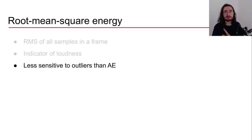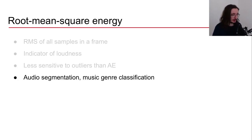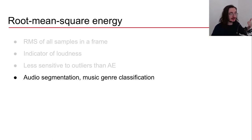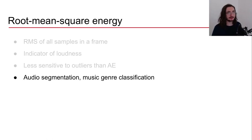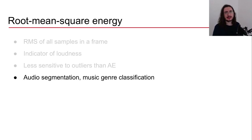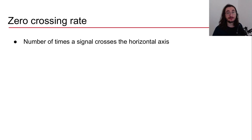There are many applications for RMS energy. One important use is identifying new segments in an audio signal, since RMS tends to change significantly when new events occur — useful for audio segmentation tasks like deciding whether someone is talking or not. We can also use RMS for music genre classification, which we'll see in upcoming videos.